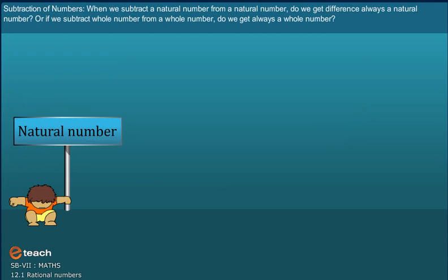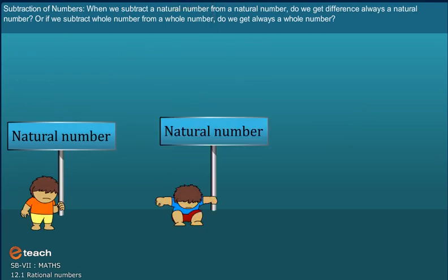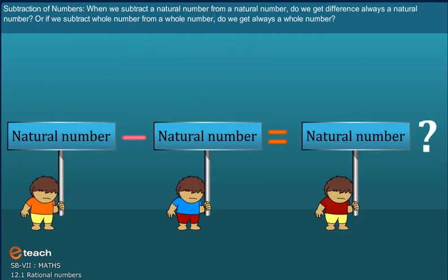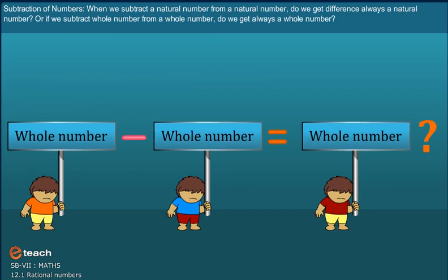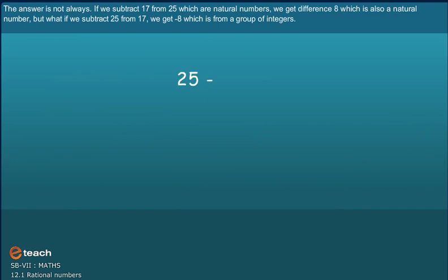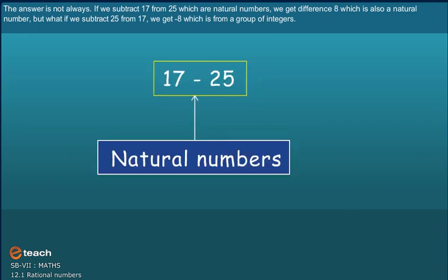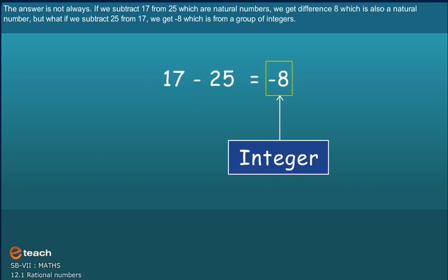Subtraction of Numbers. When we subtract a Natural Number from a Natural Number, do we get difference always a Natural Number? The answer is not always. If we subtract 17 from 25 which are Natural Numbers, we get the difference 8 which is also a Natural Number. But what if we subtract 25 from 17, we get minus 8 which is from a Group of Integers.